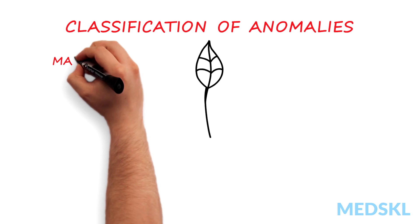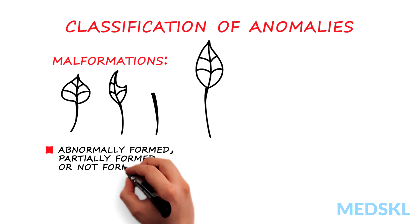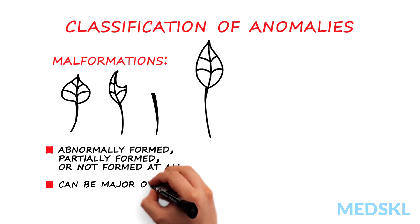Malformations are defects where a structure is either abnormally formed, partially formed, or is not formed at all. They can be major, meaning they often have medical consequences and require surgical repair, or minor, in which case the consequence is mostly cosmetic.